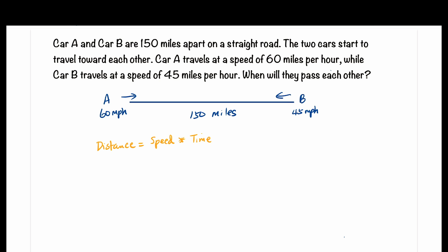For example, if you're going 50 miles per hour and you've traveled for two hours, simply multiply the two and you get 100 miles.